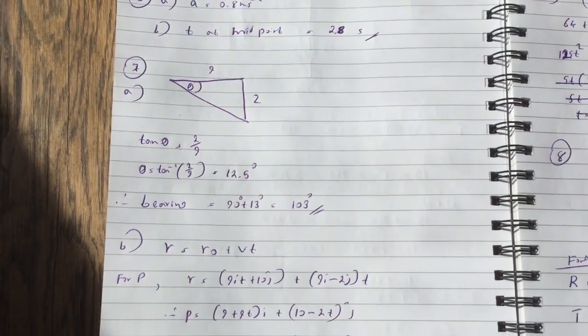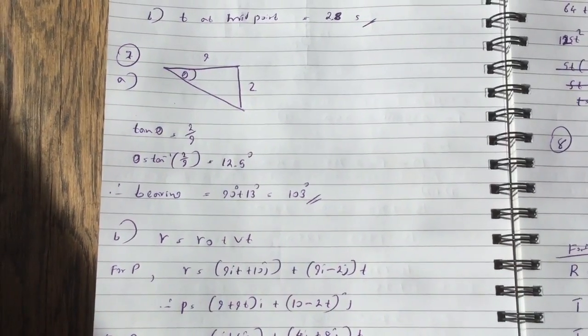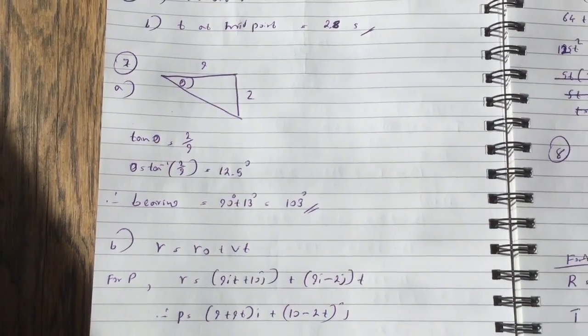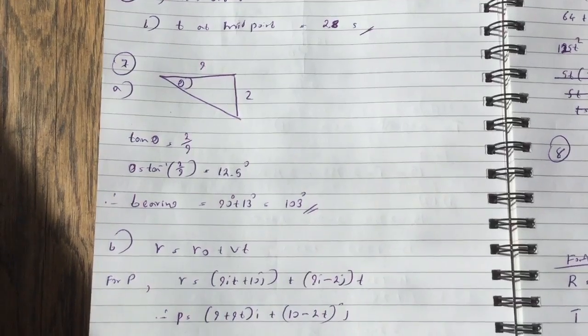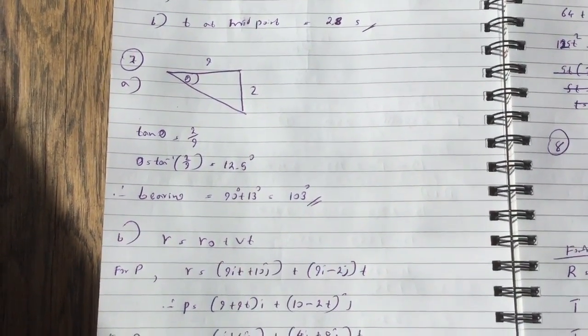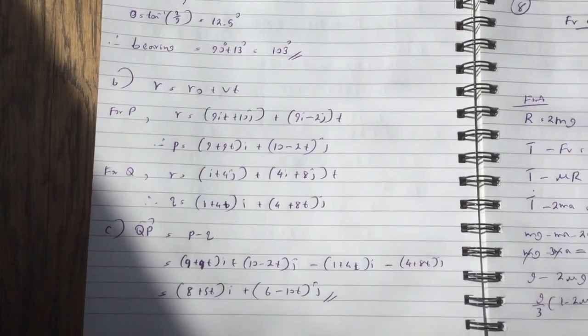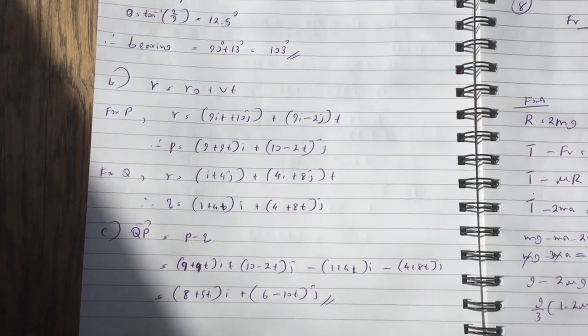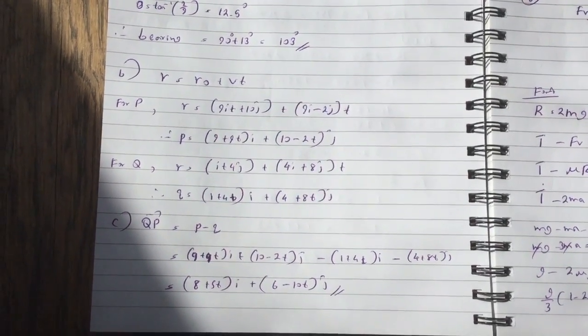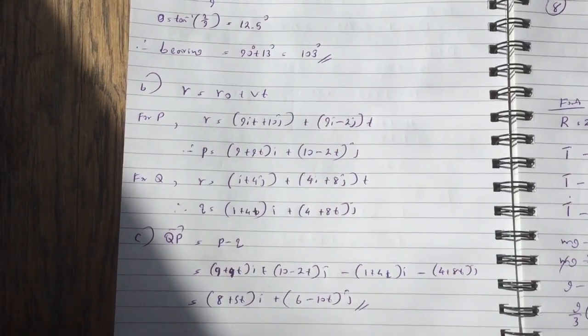Question 7. So we need to work out the bearing. So if you work out this angle which is first of all tan theta which is 2 over 9 and theta is 12.5, so the bearing will be that plus the 90 which is 103 degrees. And these are very simple questions guys. It's using r equals r0 plus vt. So for P you sub those values in and you get 9 plus 9ti plus 10 minus 2tj.